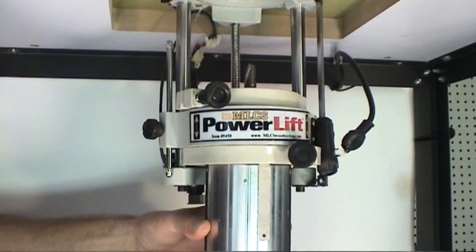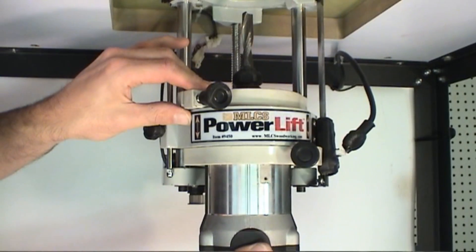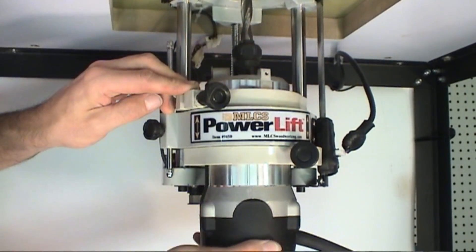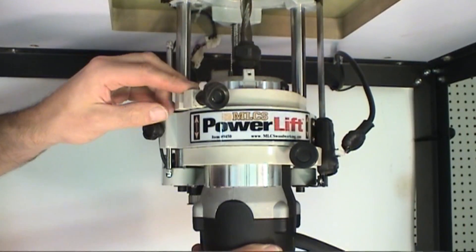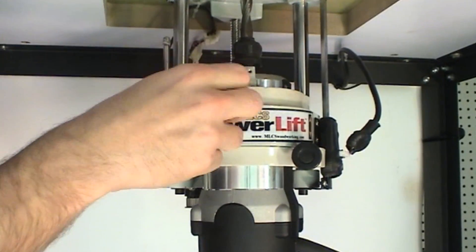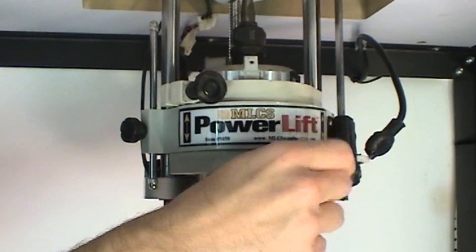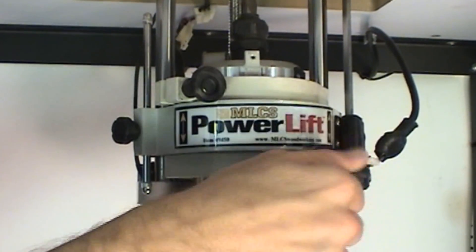The PowerLift supports most 3.5 inch diameter router motors. It's really easy to get your router mounted into the lift. You just loosen both the clamps, slide your router up in there and then tighten the upper and lower clamp and you're ready to go. There's no tools required and you can get your router in and out in a matter of seconds.